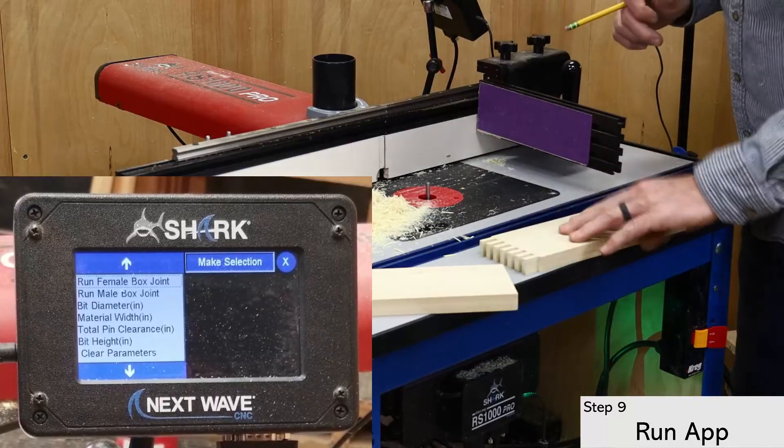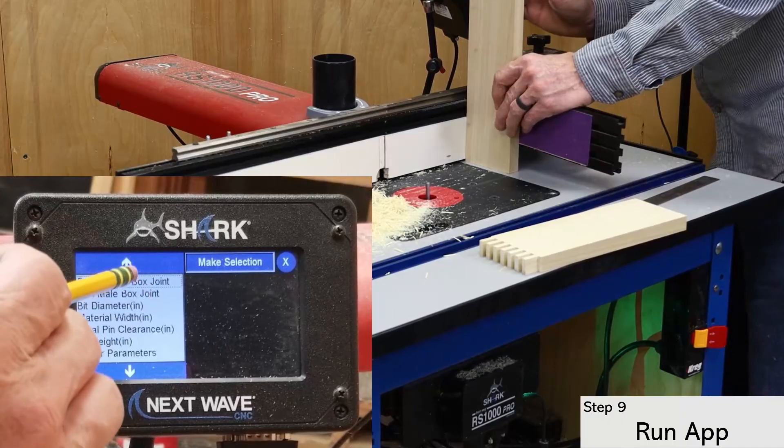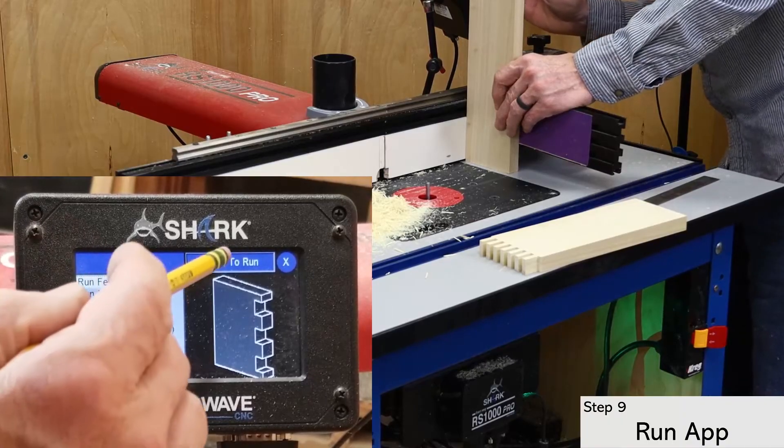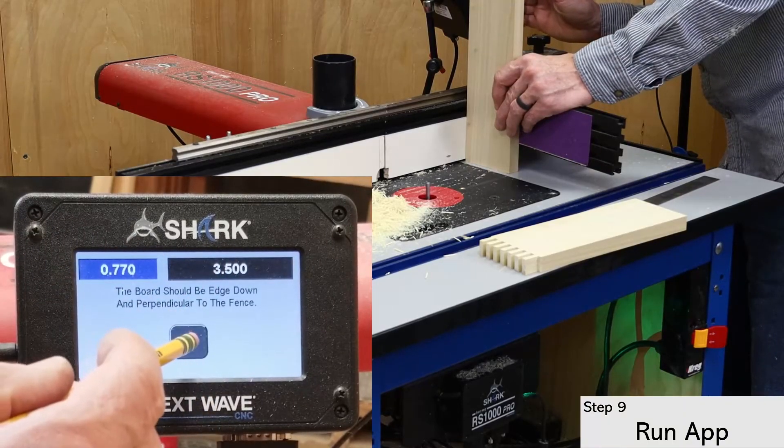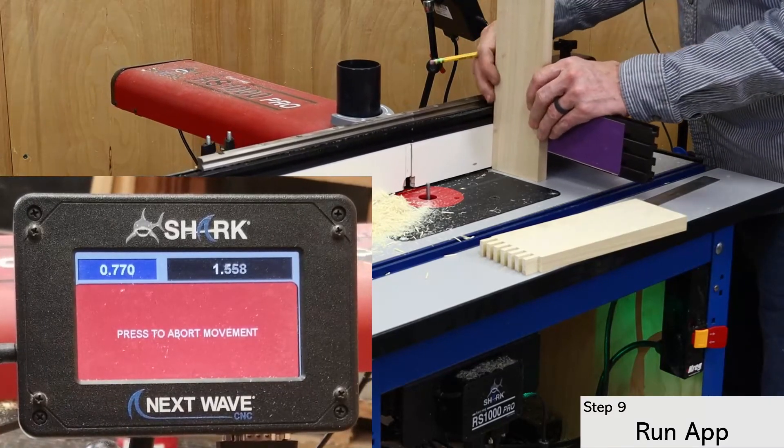Proceed to the next board for the female part of the box joint. Cutting these parts is done the same as the male part, except the fingers are offset and cut in a single pass since the light clearance pass is not added to this part.